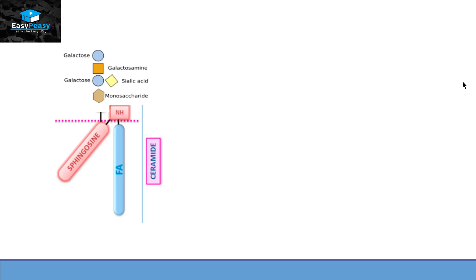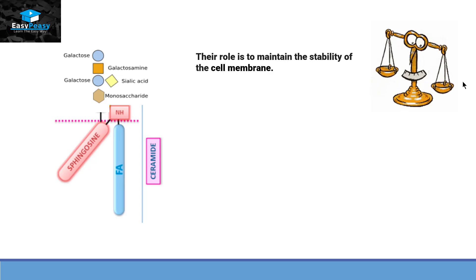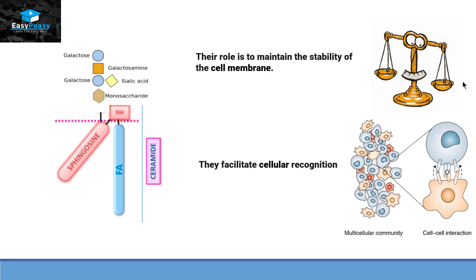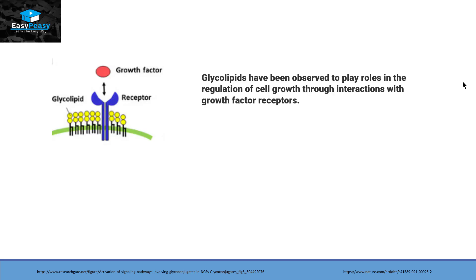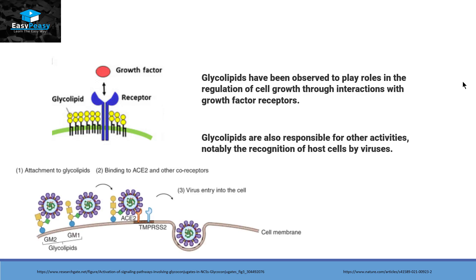Glycolipids have various functions. The first is that they provide stability to the cell membrane. As they are present on the surface of the cell, they also facilitate cell recognition and cell-to-cell interaction. Glycolipids have been observed to play roles in regulation of cell growth through interactions with growth receptors, and they are also responsible for the recognition of whole cell bioviruses.